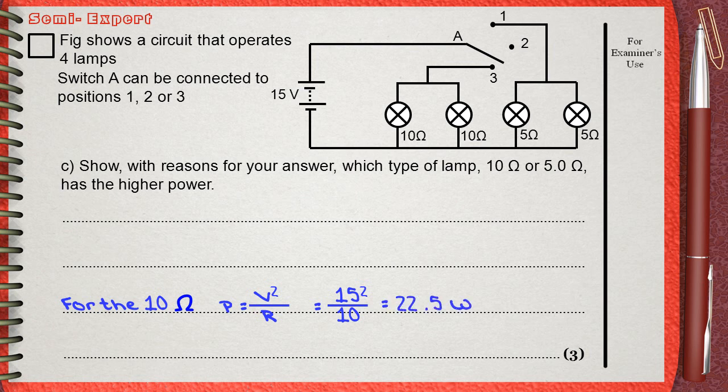This tells us that each 10 ohm lamp will work with power 22.5 watts. But what about the 5 ohm lamp? Using the same equation, P equals V square over R, which is 15 square divided by 5.